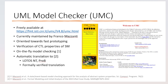Furthermore, a UMC model can be translated to LOTOS NT or ProB. In this case, the source and target models are proved to be strongly bisimilar. This means we can assign the formal semantics of LOTOS NT, an ISO standard, to UMC models once they are proved strongly bisimilar.